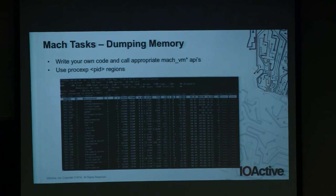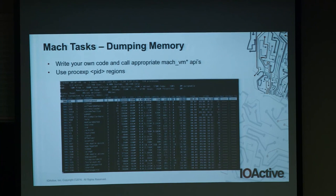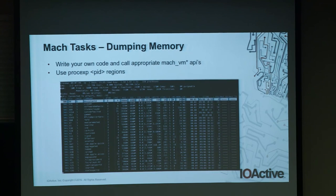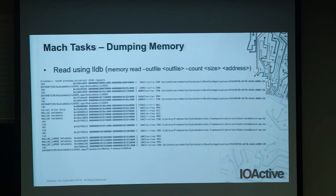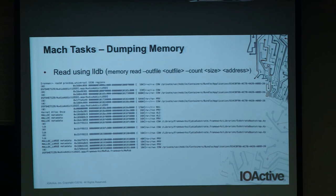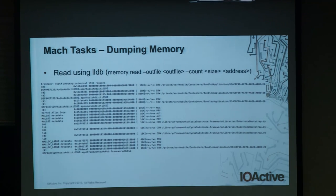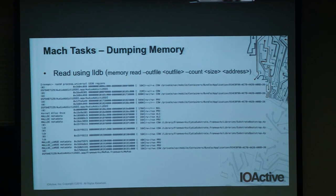Once you have a task port handle, you can use the vm_map APIs to read and write to memory and inject your own shellcode. For dumping memory, you can write your own code calling VM APIs, or use ProcEXP: specify the process ID, use the regions option, pass that region to LLDB, read the region, and write it to a file for later processing.